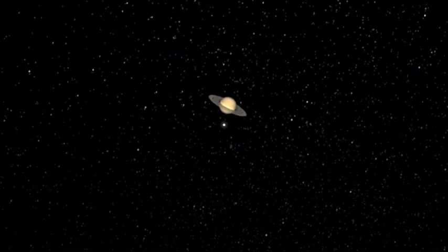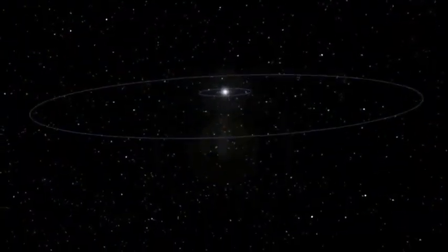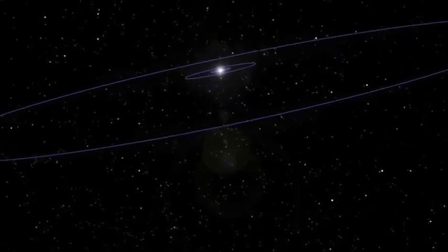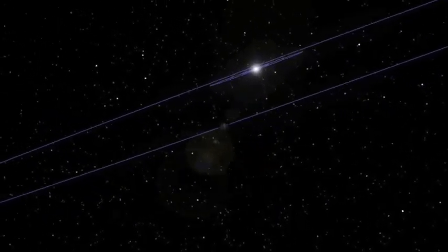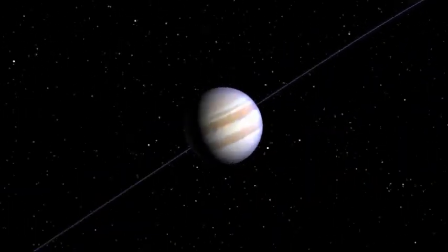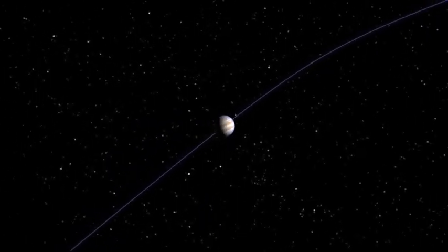Finding a habitable planet this soon among the few hundreds of stars in our local neighborhood has important implications for the number of habitable systems in our galaxy. It implies that either we were incredibly lucky or that there are many more habitable systems than we ever thought.